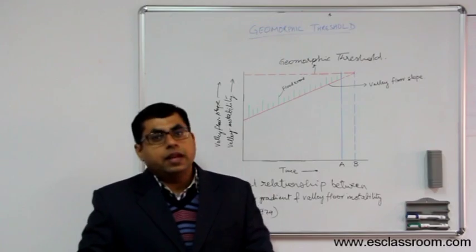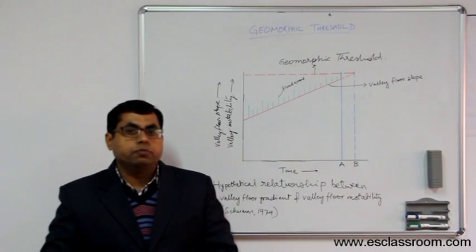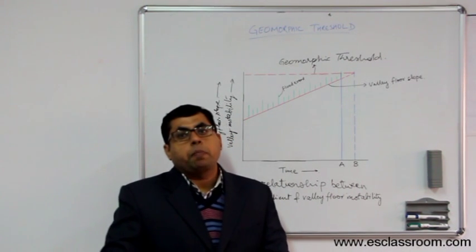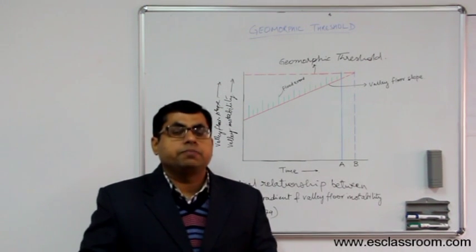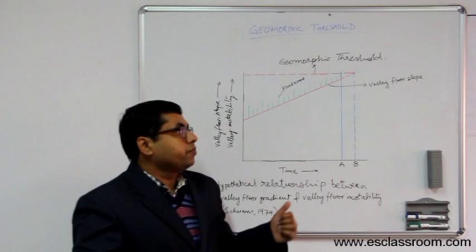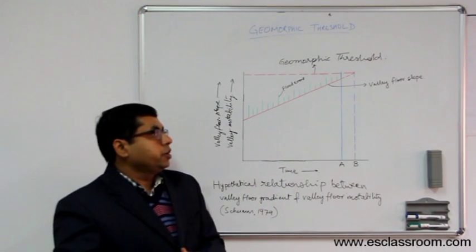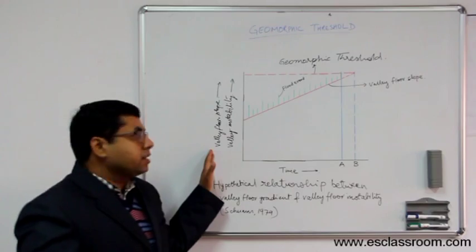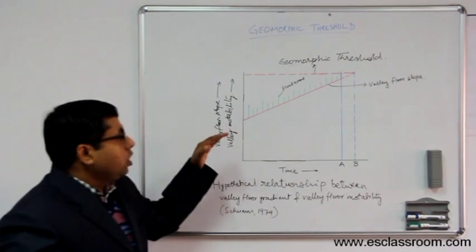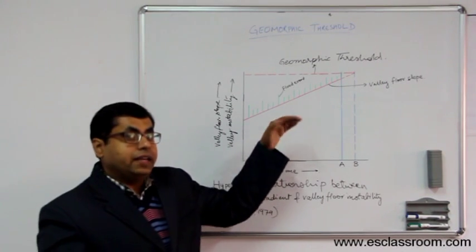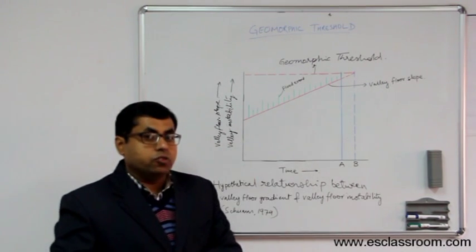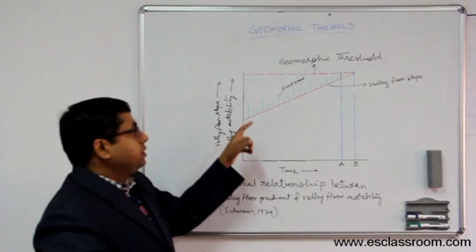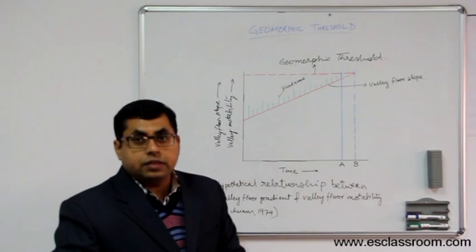Now, there is one landmark paper in geomorphic threshold. It was given by Schumm in 1979, in which he has explained different thresholds. And he has actually clarified the concept of thresholds. Now, I take this figure, this diagram from Schumm's paper, in which you see that he gives a hypothetical relationship between the valley gradient and the valley instability. So, this line represents the valley gradient, which is increasing over a period of time. And these green lines, they are the flooding events.